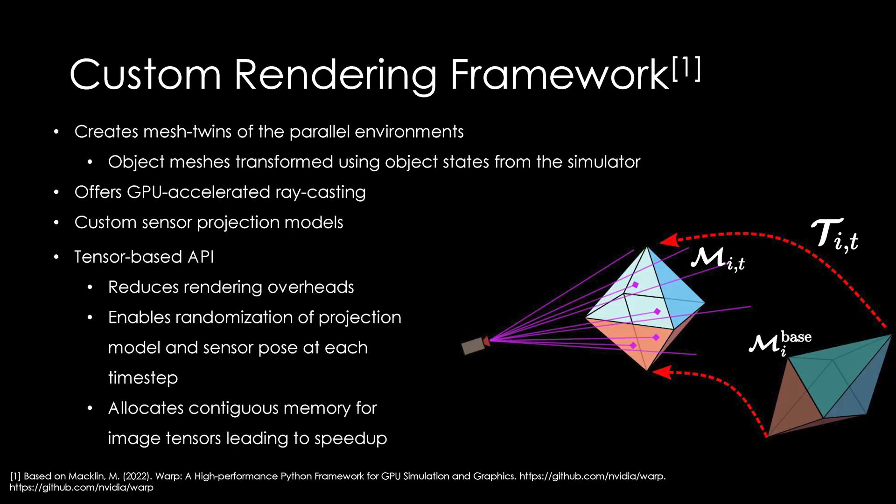We contribute a custom rendering framework for GPU-accelerated raycasting. Environment entities are represented as triangle meshes that are transformed to reflect their updated states. A tensor-based API allows consolidation of image tensors, randomization of sensor orientation, and projection model, leading to greater control in simulation.